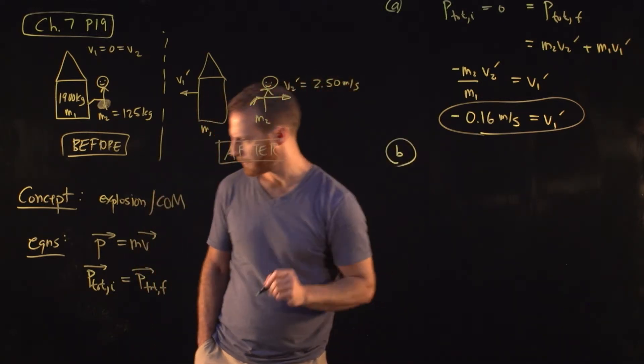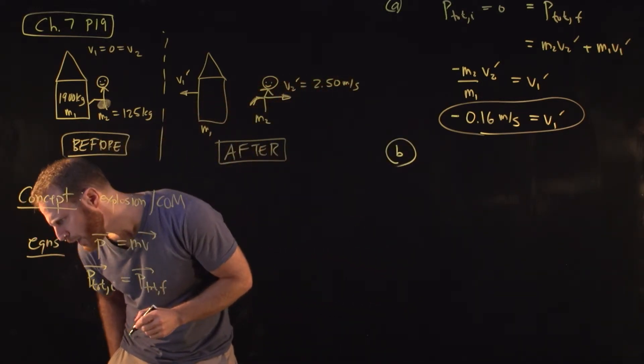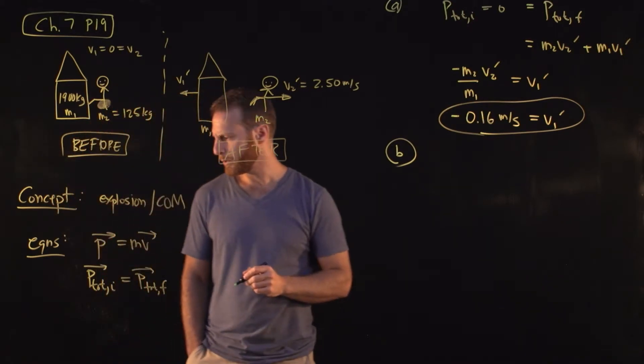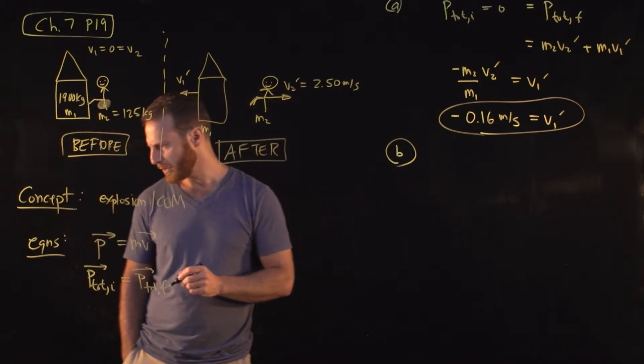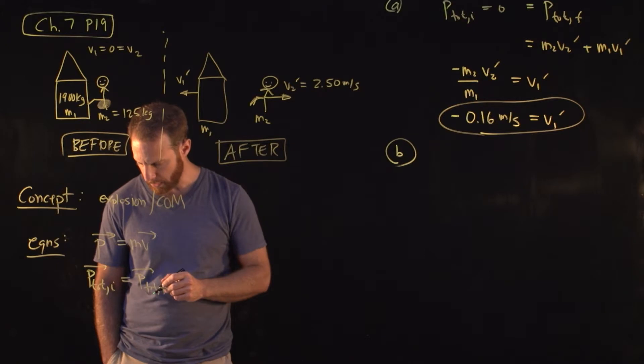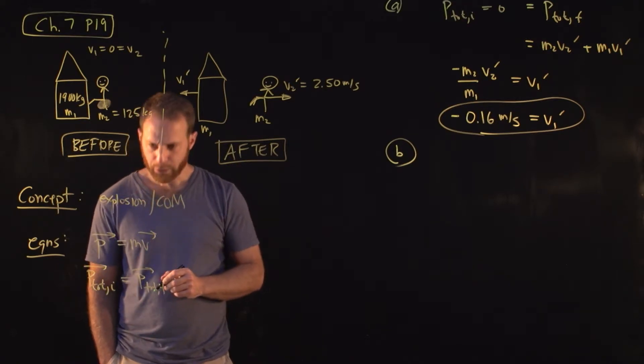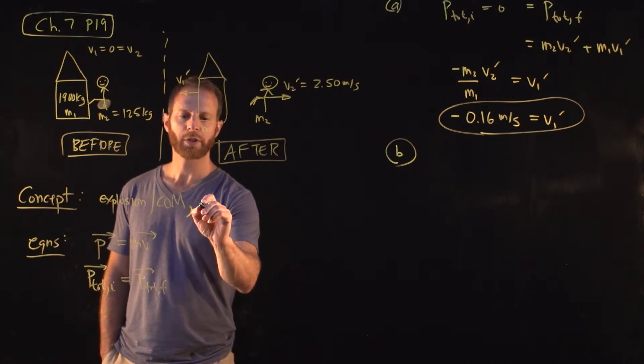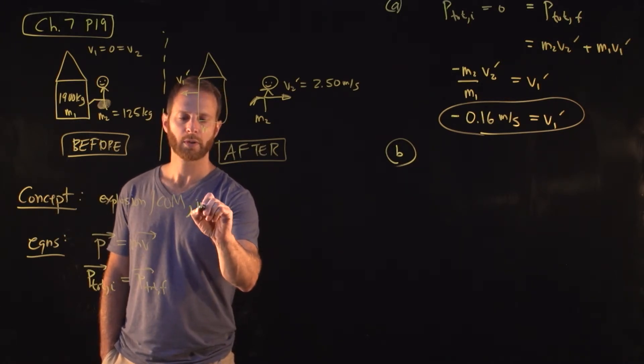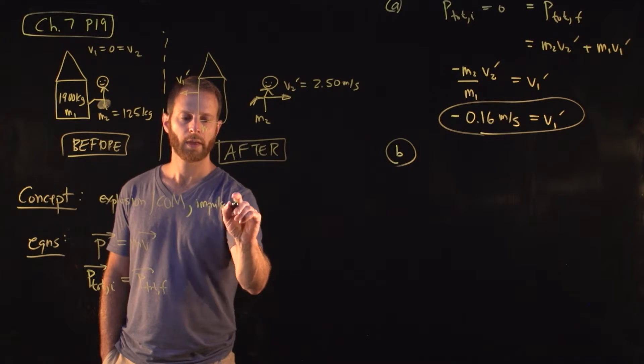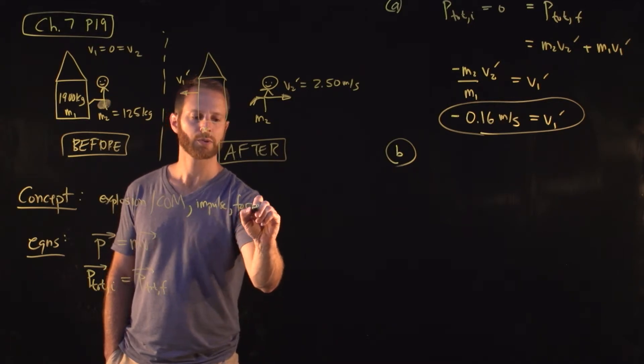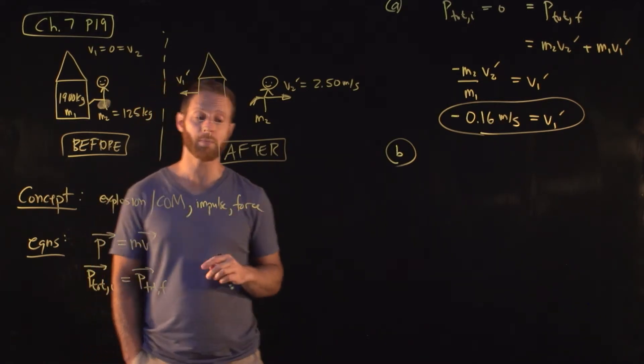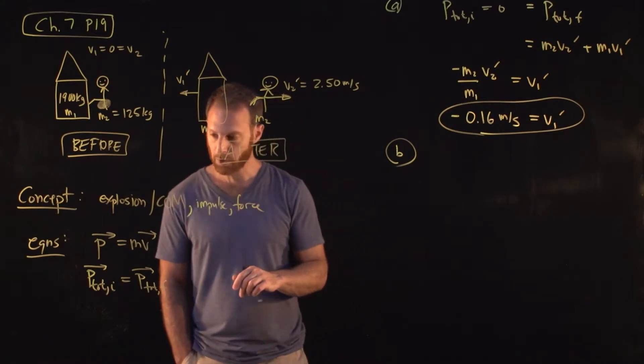Part B. If the push lasts for 0.6 seconds, what is the average force exerted by each on the other? So I think one thing that we probably should have listed here conceptually to do problem B is we should think about impulse and also force and what the relationship is between impulse, momentum, and force.